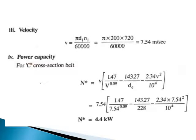For velocity calculation: v = π·d1·N1 / 60000 = π × 200 × 720 / 60000 = 7.54 meters per second. For power capacity of a C cross-section belt, use the equation: N = v × (v × 1.47 / (v × 0.09) − 143.27/de − 2.34·v² / 10⁴). Substituting the values of de and v gives a power capacity of 4.4 kilowatts.